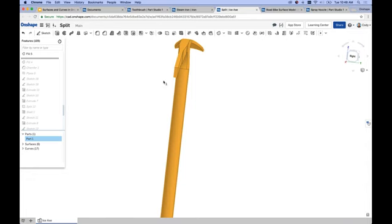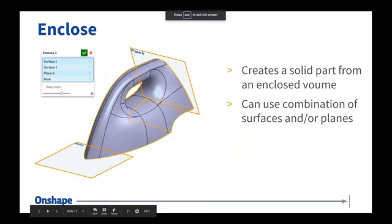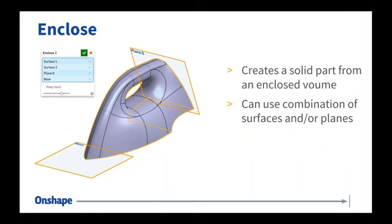We also have a separate enclose feature. One of the last steps in surface modeling is to take your surface model and convert it to a solid — oftentimes the end result you want is still a solid part and we just used surfaces to get there. That's where enclose is helpful. Enclose is often the last thing you do to your surface model — it takes a solid volume based on your selections and makes that a solid part. What's different about this is you can use combinations of selections — including planes — to make a single enclosed volume.